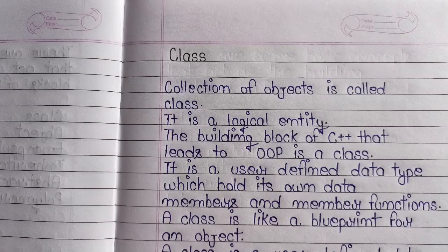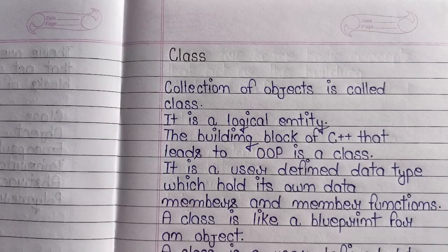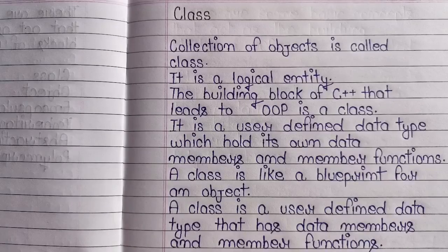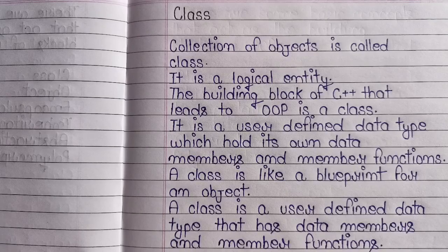Collection of objects is called class. It is a logical entity. The building block of C++ that leads to OOP is a class. It is a user-defined data type which holds its own data members and member functions. A class is like a blueprint for an object.